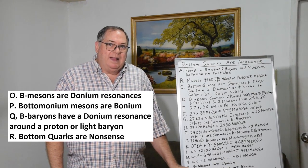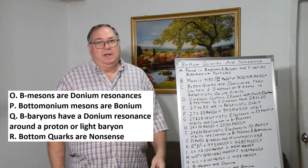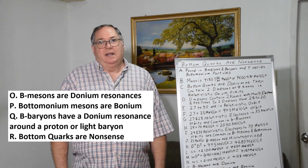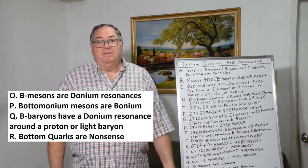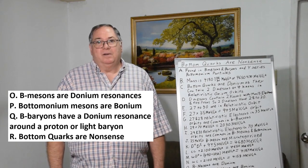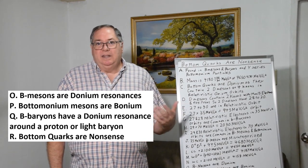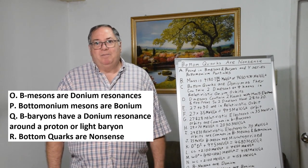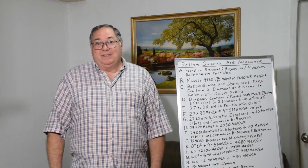It was onium theory all along. The bottom quark is an onium resonance by itself. It never was a fundamental particle. So using bottom quarks in the theory is nonsense, along with charm quarks.